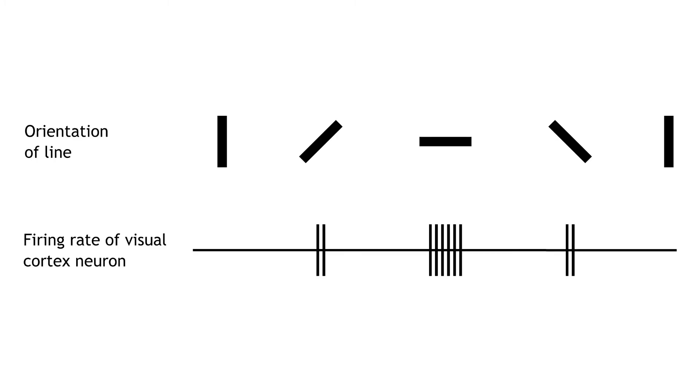These receptive fields cause neurons in the primary visual cortex to respond best to a line in a specific orientation. The firing rate of the neuron will increase as the line rotates towards the preferred orientation. The firing rate will be highest when the line is in the exact preferred orientation. Different orientations are preferred by different neurons.